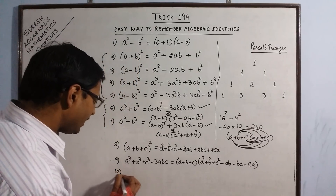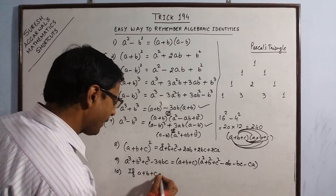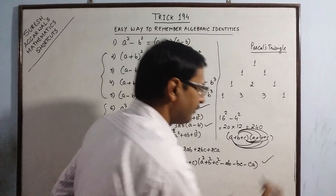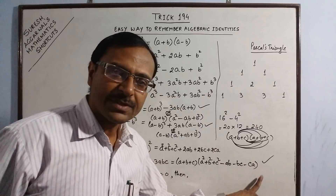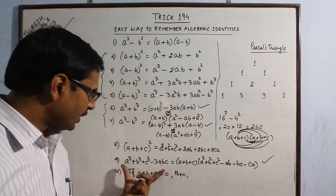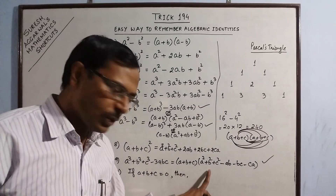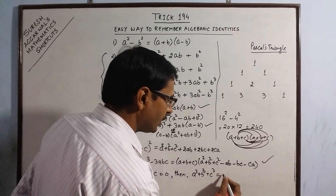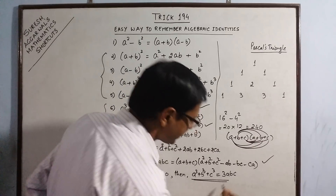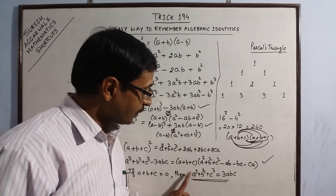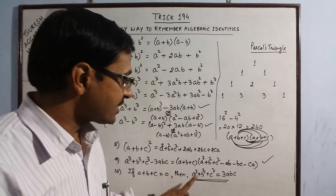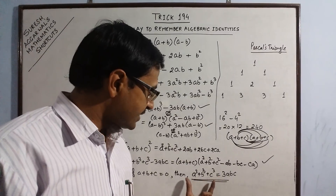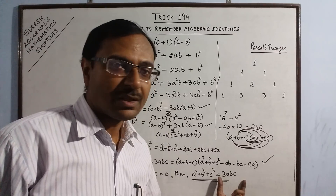Identity number 10: if A plus B plus C equals 0, then in identity number 9 the whole RHS becomes 0, so A cube plus B cube plus C cube minus 3ABC equals 0. Therefore A cube plus B cube plus C cube equals 3ABC. This identity can be used to find the sum of cubes of 3 integers whenever the sum of the bases is 0.